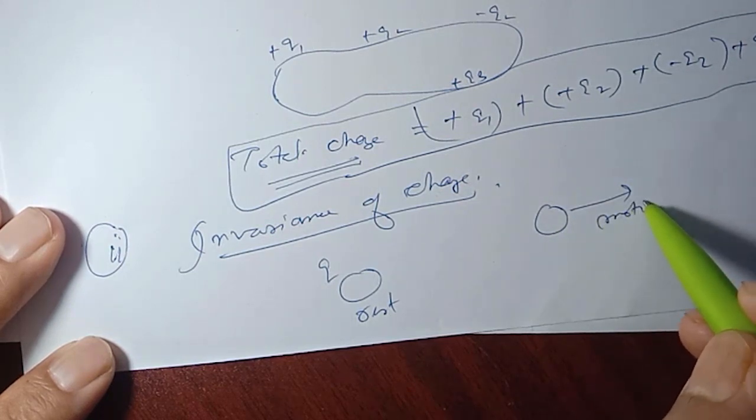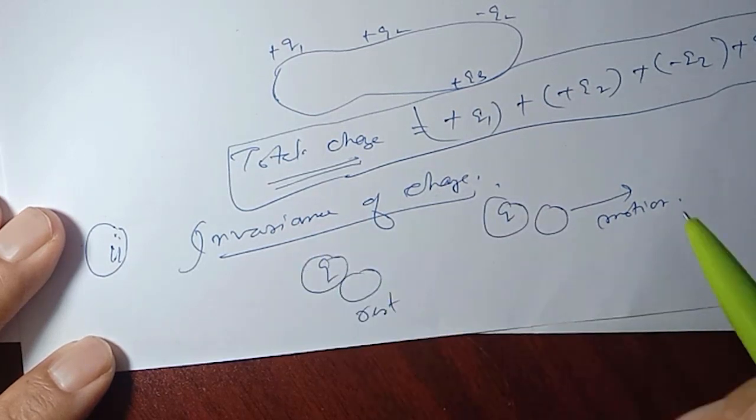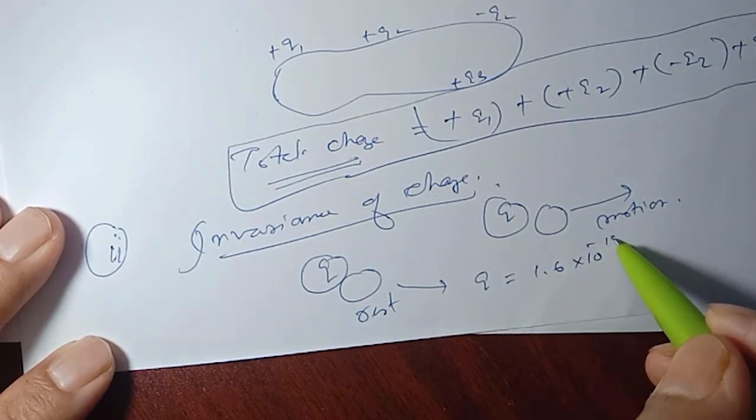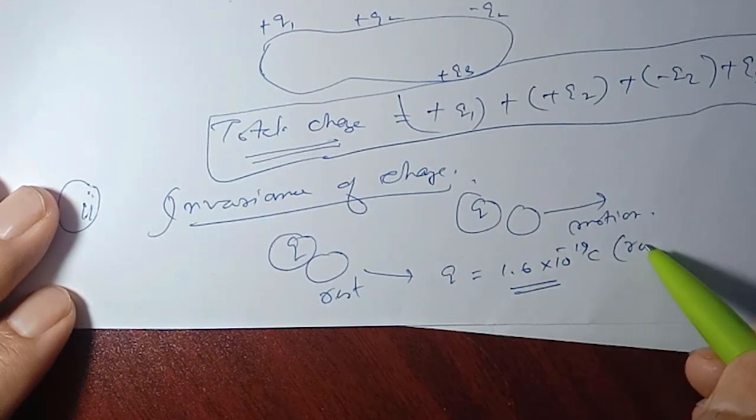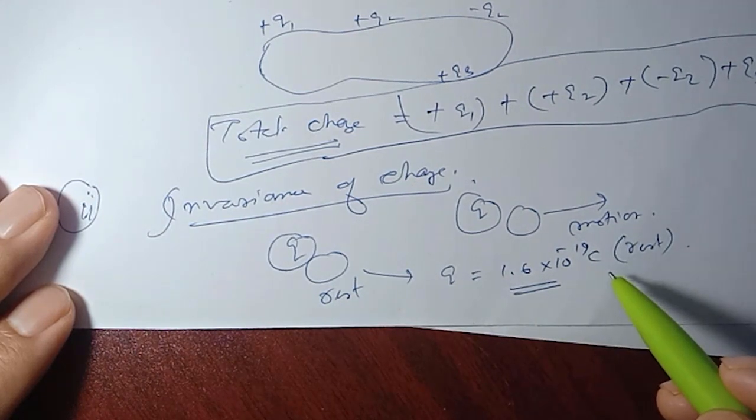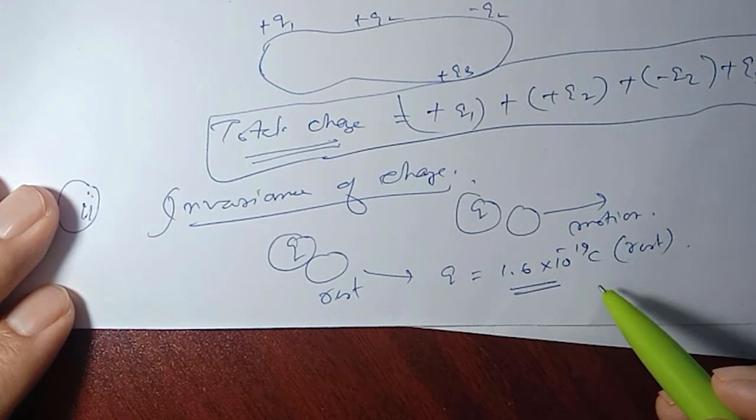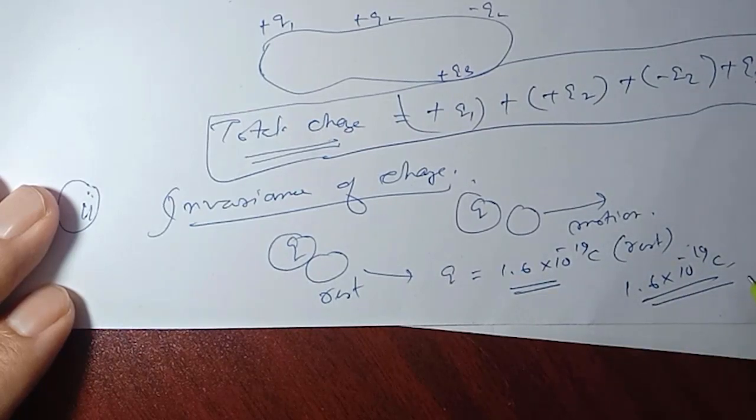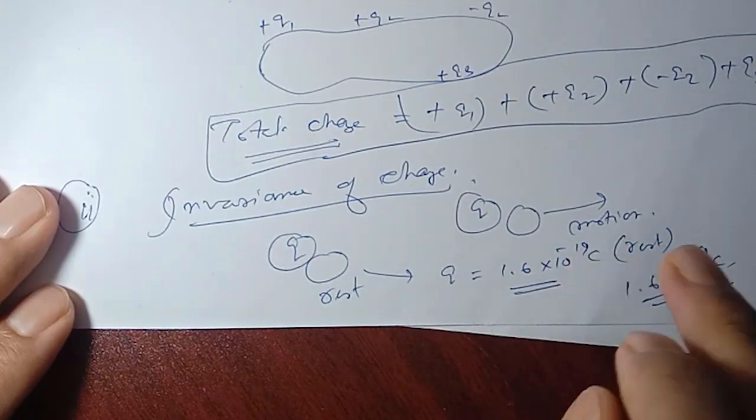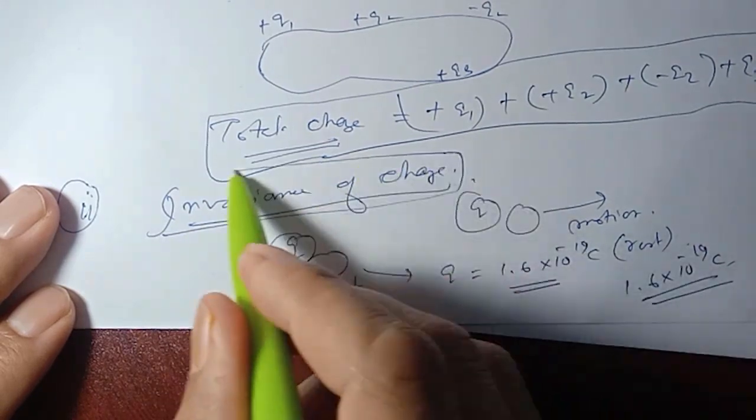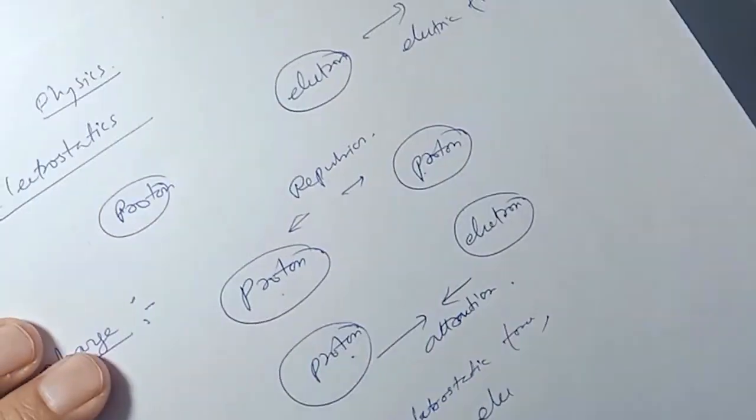Now the second property: charge is invariant. Inside of any body, whether the charge is at rest or in motion - for example, an electron charge is 1.6 into 10 power minus 19 coulombs. Whether the charge is at rest or in motion, the value remains the same: 1.6 into 10 power minus 19 coulombs. This is the invariance of charge.